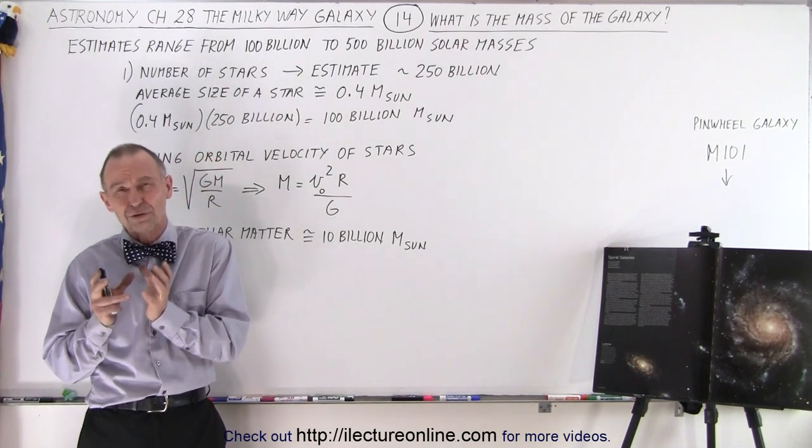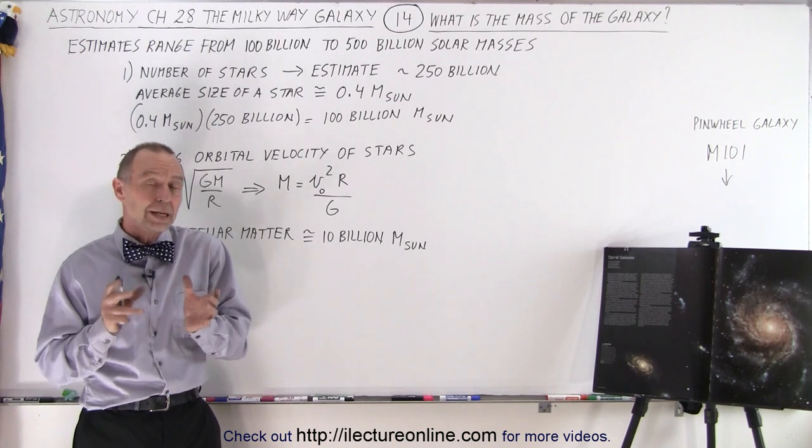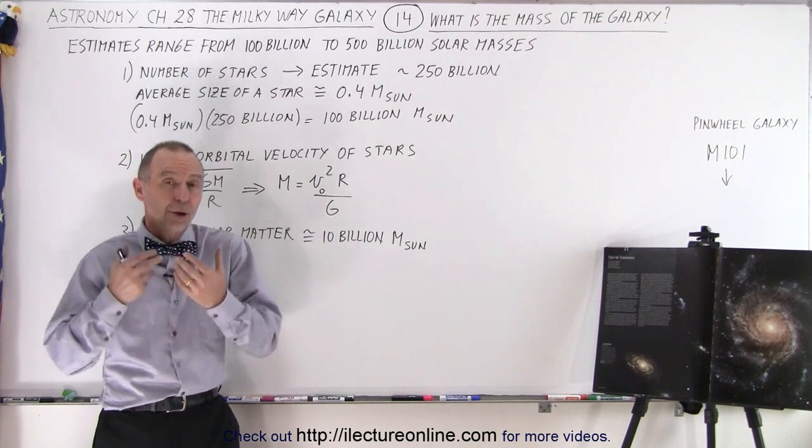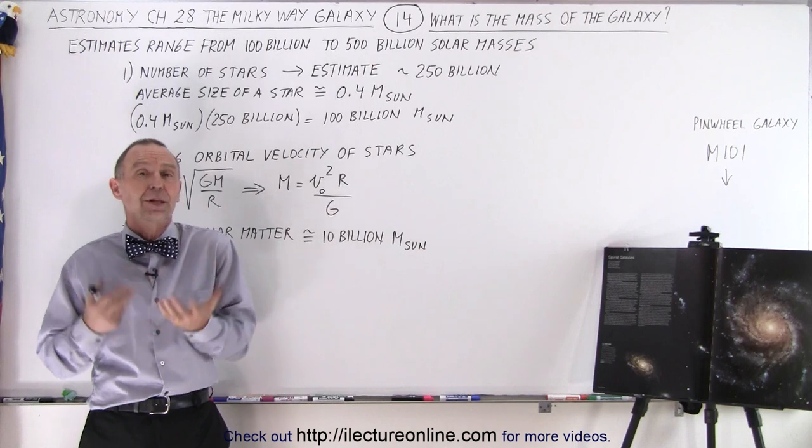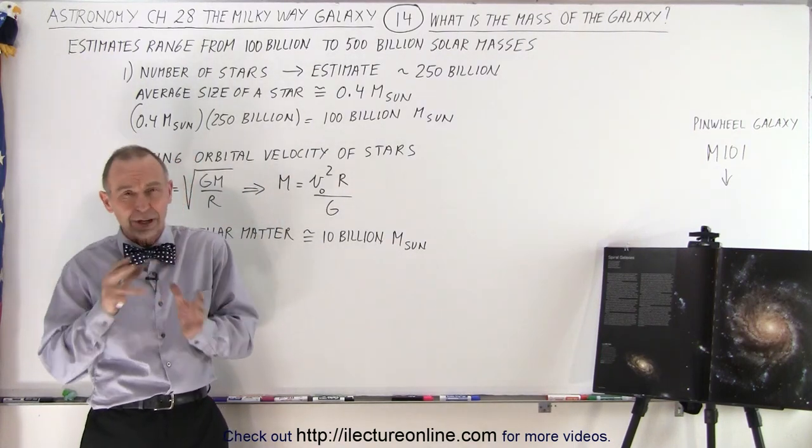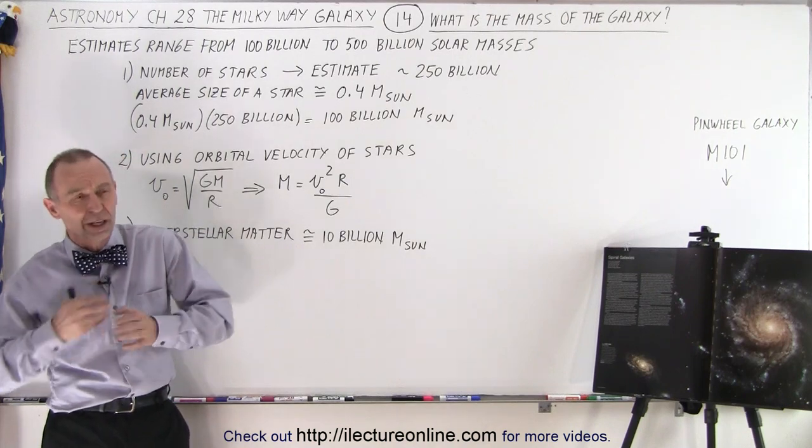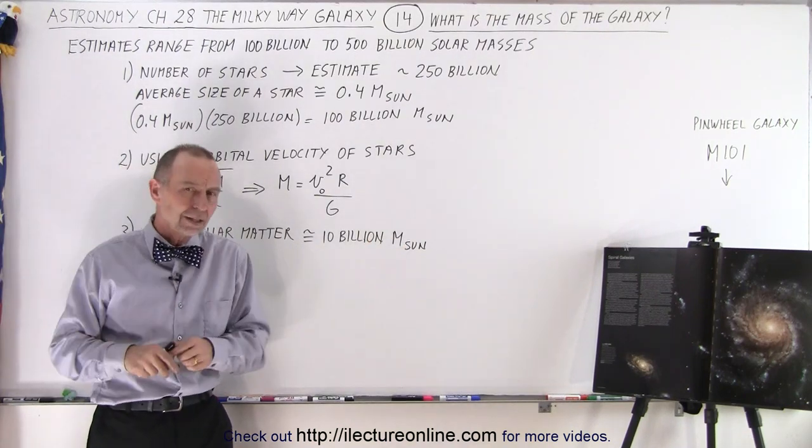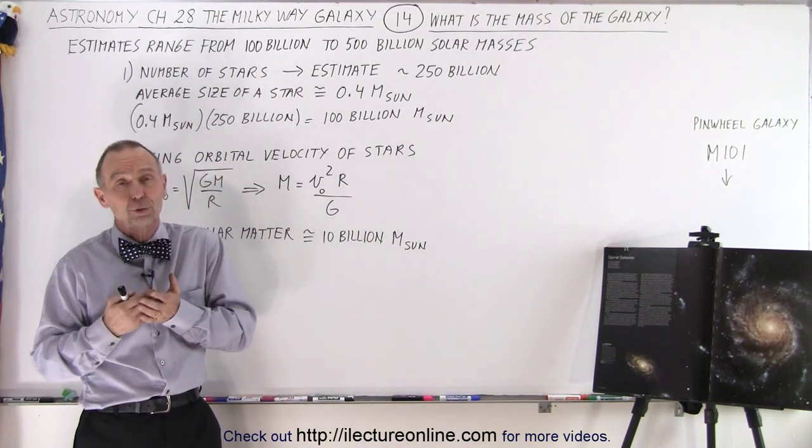It used to be a fairly straightforward answer because they had estimated the number of stars in our galaxy to be about 250 billion. So what they did was they took certain sections of the galaxy, tried to estimate the density of the stars, then extrapolated to the entire galaxy, and the number came out to be 250 billion.